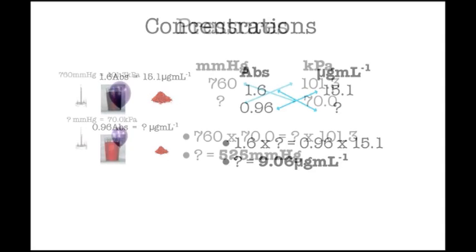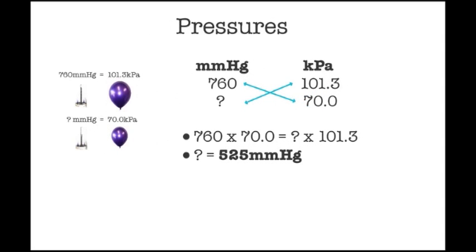Lastly, to convert units of pressure, we use headings of millimeters of mercury and kilopascals and convert 70 kilopascals to 525 millimeters of mercury.